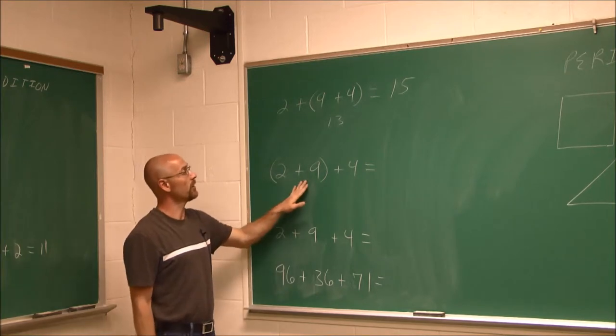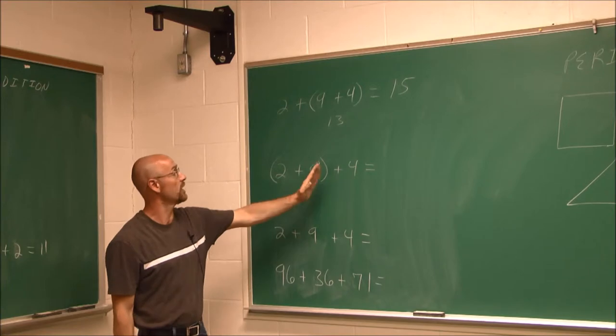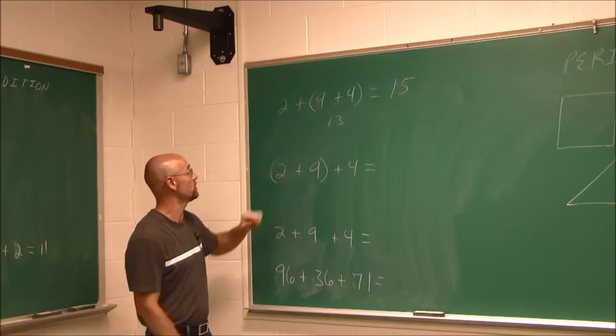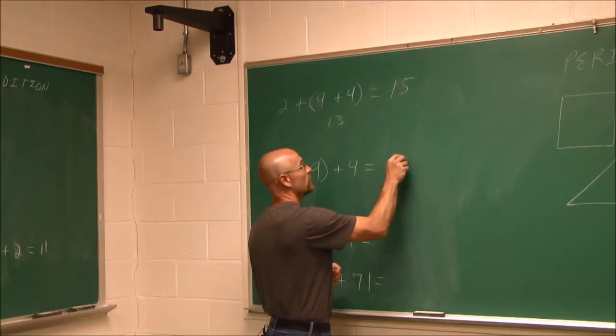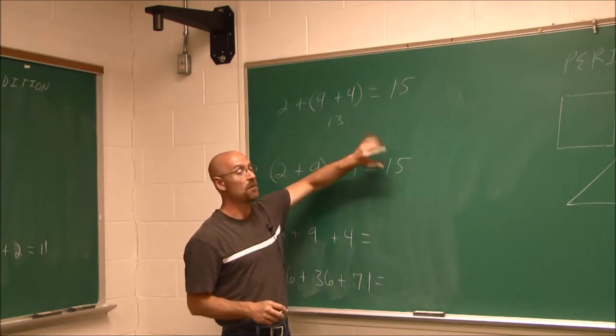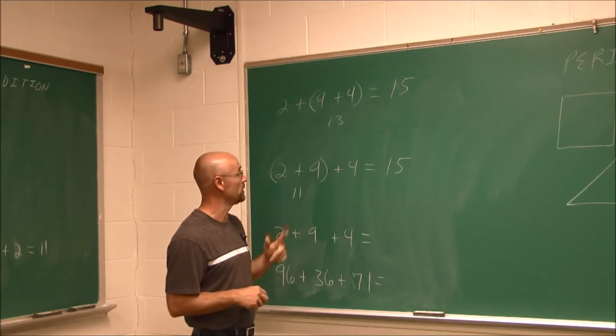Now, here I have the same example, but I'm going to do it in a different order. I have 2 plus 9 plus 4, but I'm going to add the 9 and 2 first. 9 plus 2 is 11, so I'll write that right here. And 11 plus 4 is 15. We can see we got the same sum. And because we have the same sum, we know that that associative property does work.